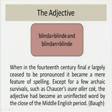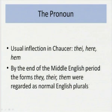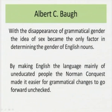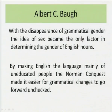With the pronoun and the adjective also getting the 'e' ending from their previous forms, and with the disappearance of grammatical gender, the idea of sex became the only factor in determining the gender of English nouns. Because of the ending in 'wifman', it was considered masculine in Old English, but now with the disappearance of grammatical gender, women becomes feminine, not masculine as it was in Old English. Baugh says further: 'By making English the language mainly of uneducated people, the Norman Conquest made it easier for grammatical changes to go forward unchecked.'